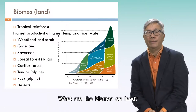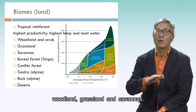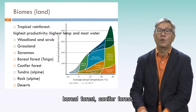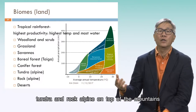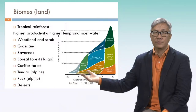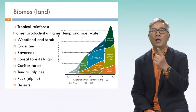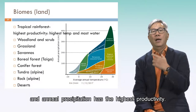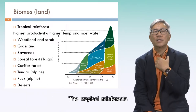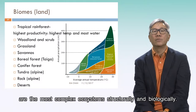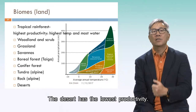What are the biomes on land? We have tropical rainforests, woodland, grassland and savannas, boreal forest, coniferous forest, tundra, alpine environments on top of mountains, and desert. The rainforest, with the highest temperature and annual precipitation, has the highest productivity. The tropical rainforests are the most complex ecosystem structurally and biologically. The desert has the lowest productivity.